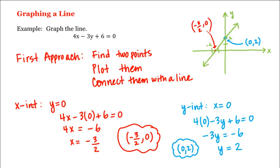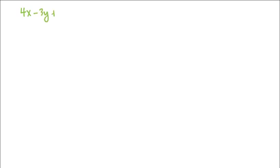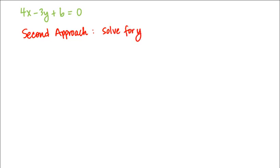What about the second approach? We are still starting with the same equation, namely 4x minus 3y plus 6 is equal to 0. But with the second approach, we solve this equation for y. When we solve a linear equation for y and get y equals mx plus b, the coefficient of x, or m, is the slope of the line, and the constant b is the y intercept.